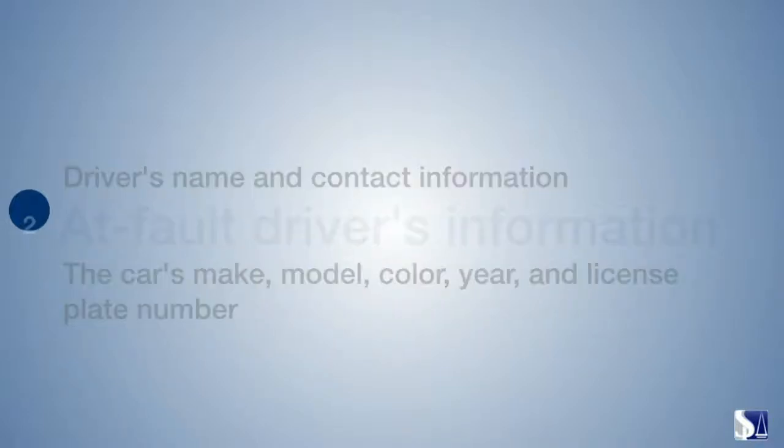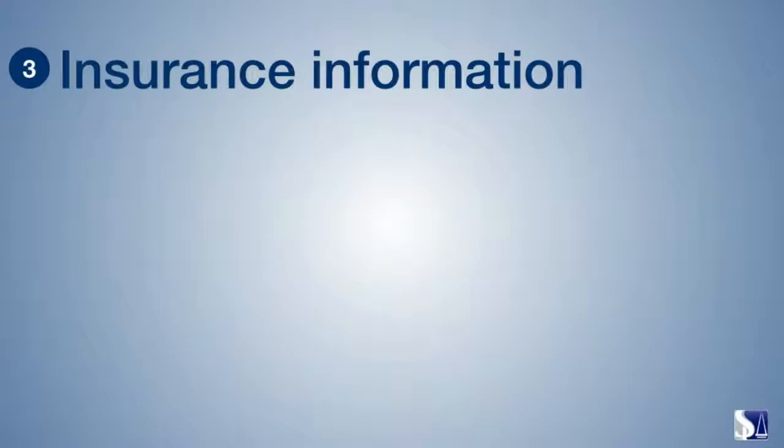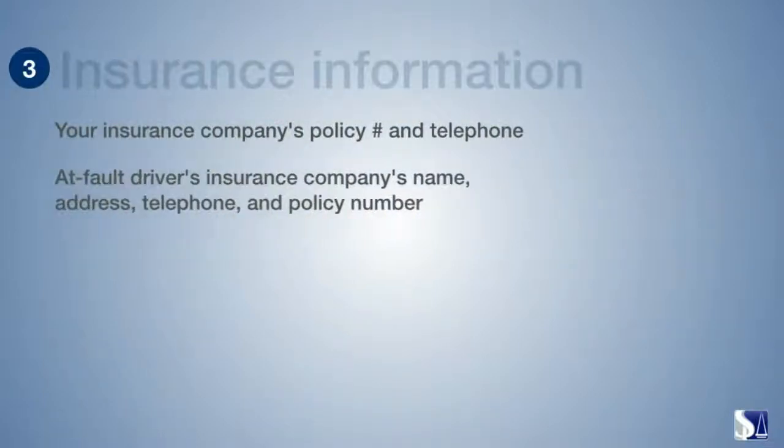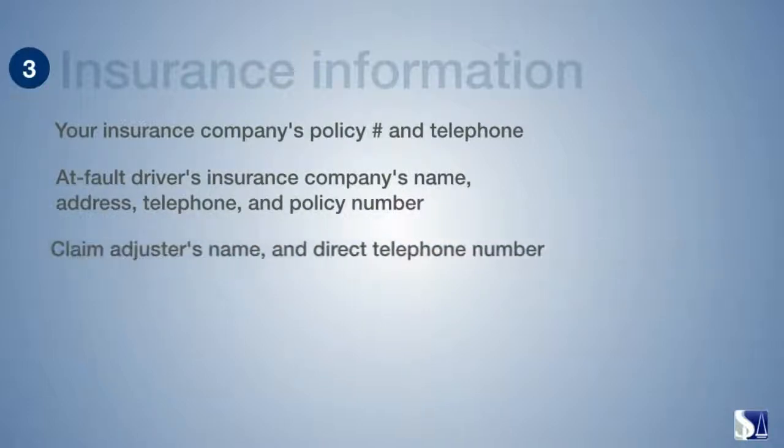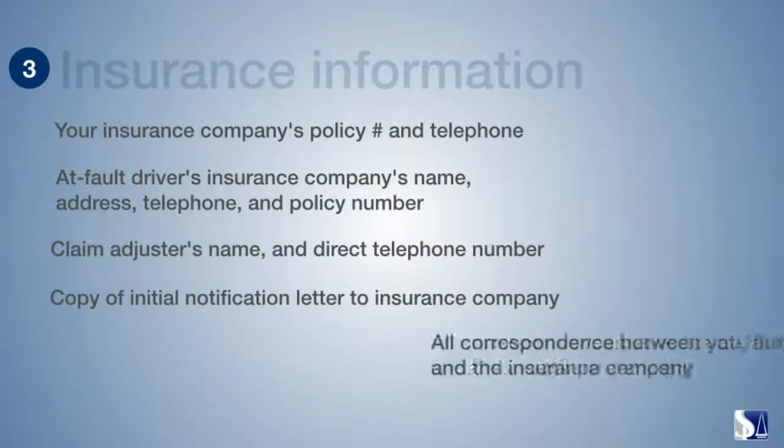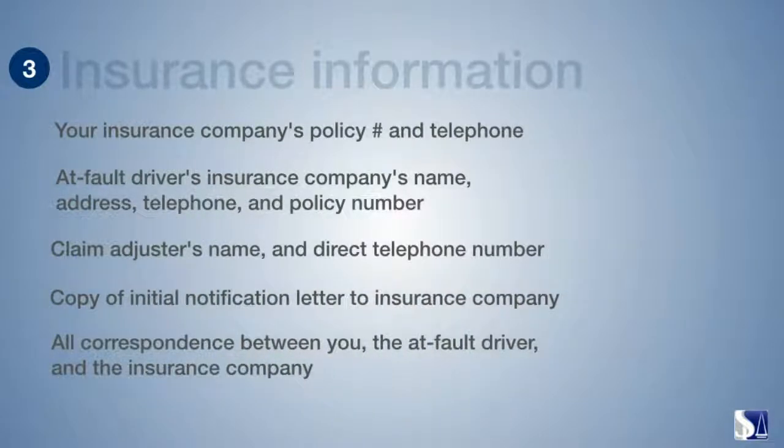Section three, all the insurance information: your insurance company's policy number and telephone, at fault driver's insurance company's name, address, telephone and policy number, claim adjuster's name and direct telephone number, copy of initial notification letter to insurance company, all correspondence between you, the at fault driver and the insurance company and the claim number.